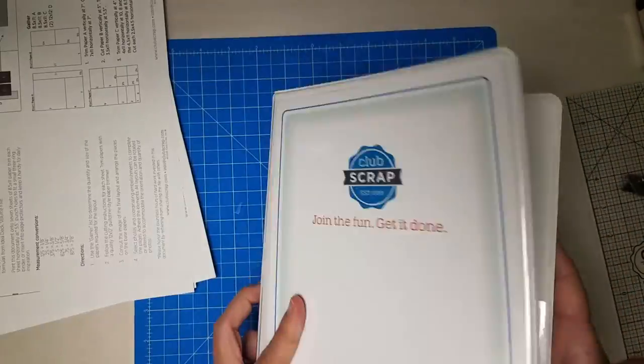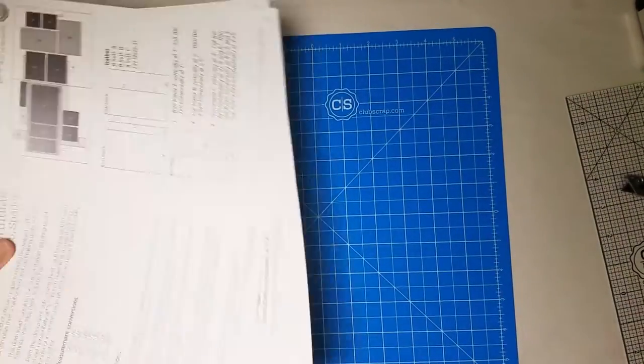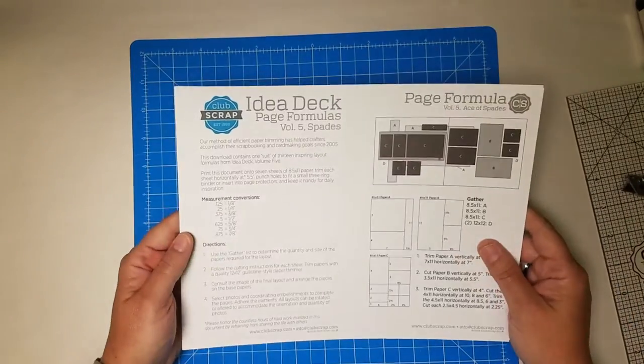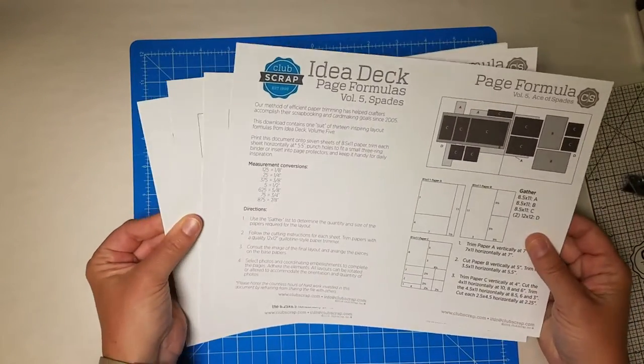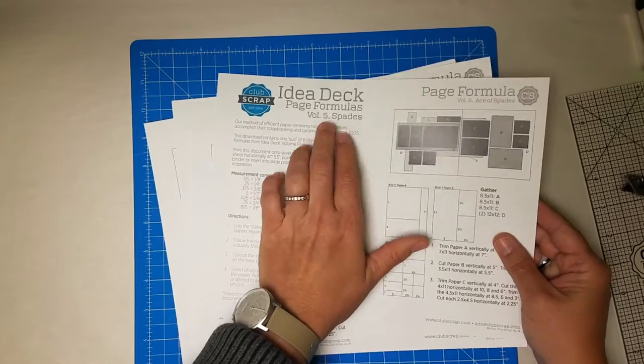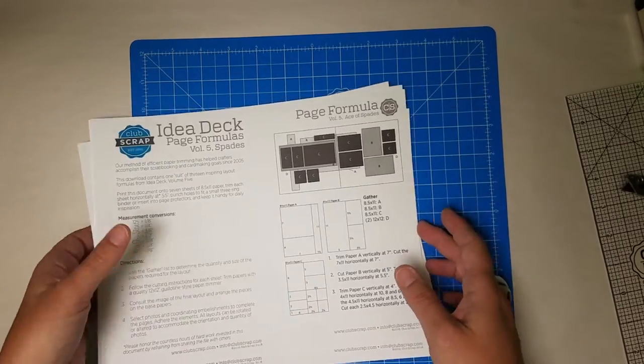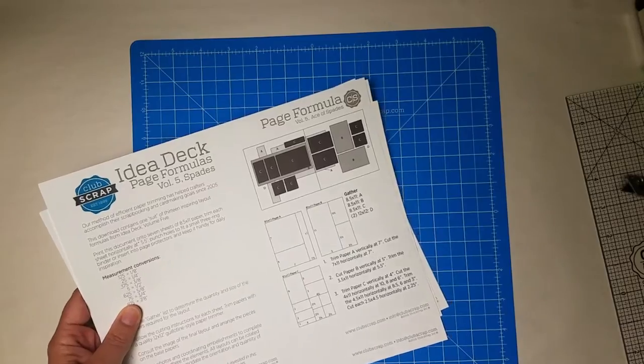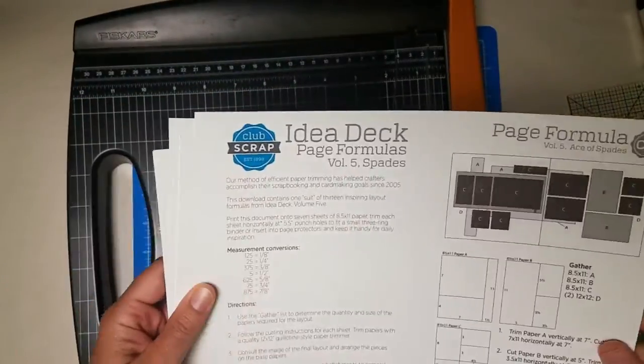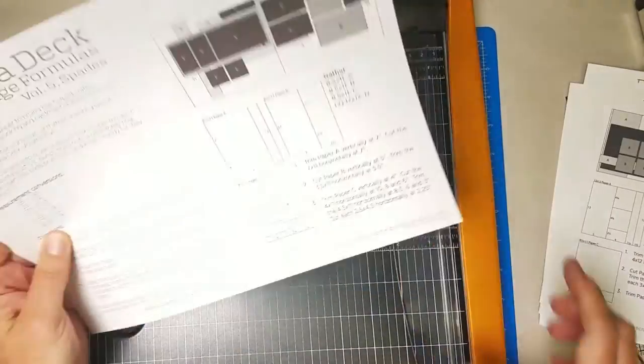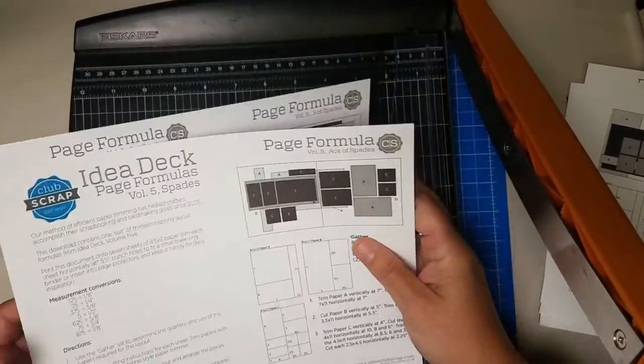Alright, now what do we put inside? Well, we have, finally, the long-awaited printable of volume five of our idea deck. This is one suit, this is the spades, but now the format is much larger in that five and a half by eight and a half size, which I love, because now I can see it even without my reading glasses.